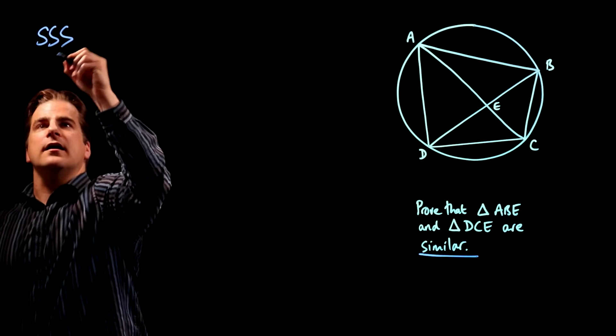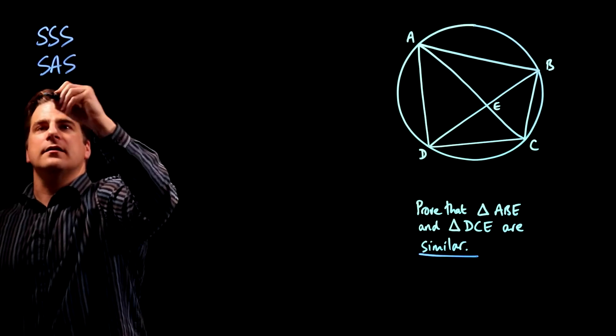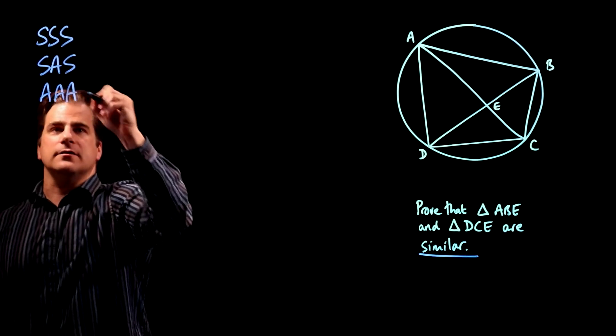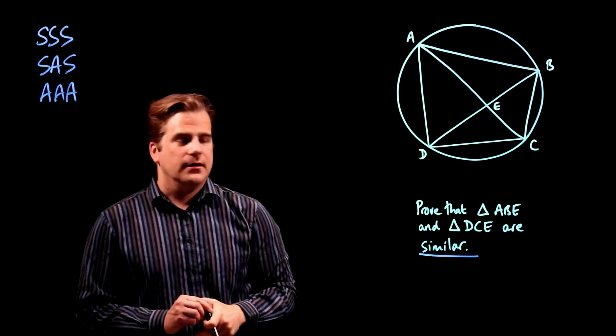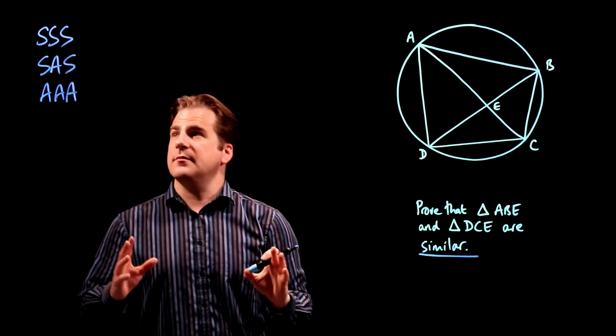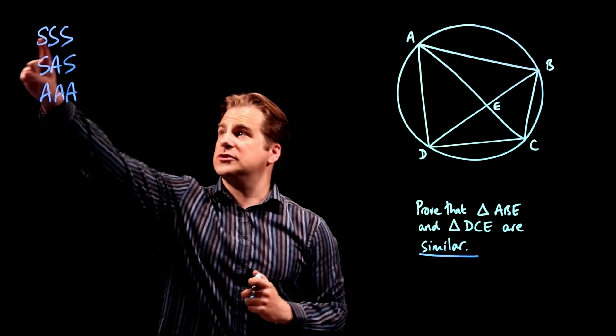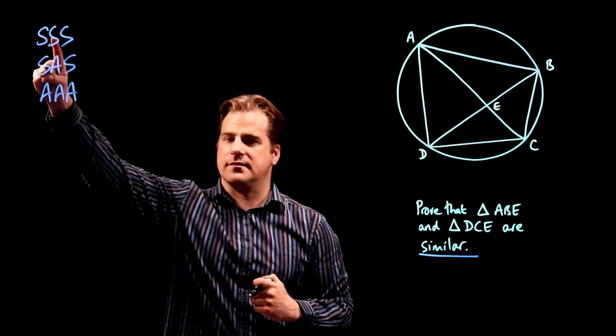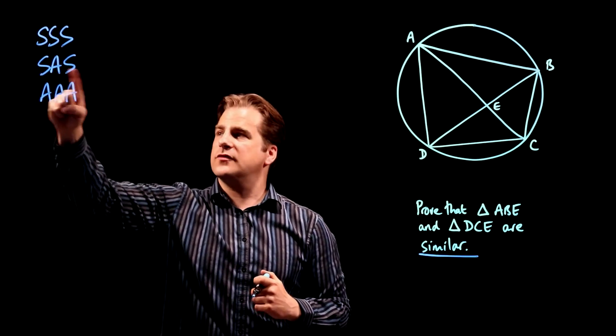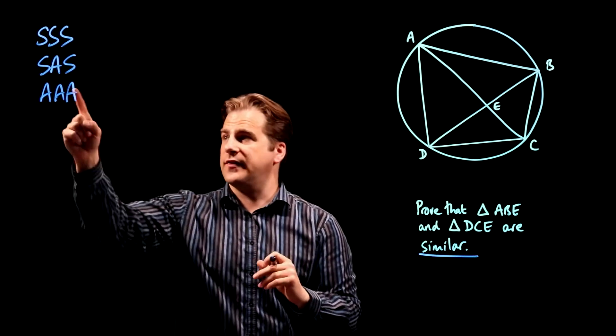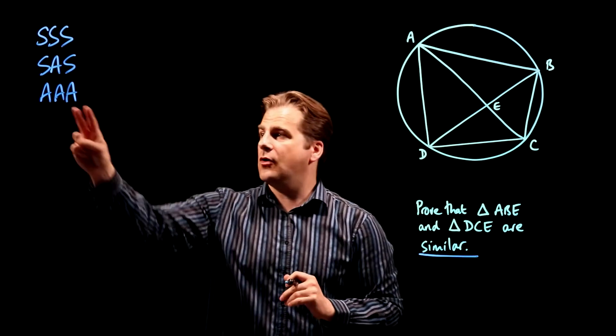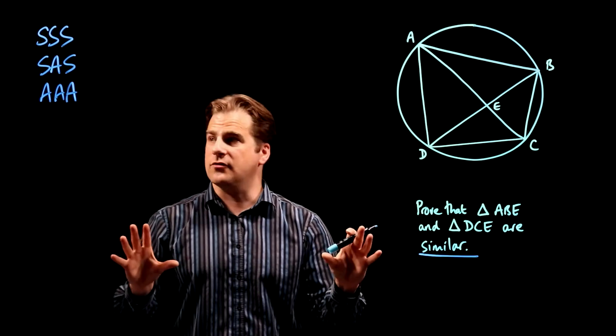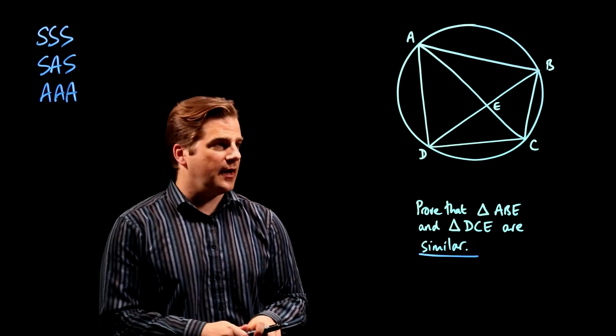They are side, side, side, side angle, side, and angle, angle, angle. That means two triangles are similar if their three sides are in proportion (SSS), or two sides are in proportion and the angle between them is the same (SAS), or if the three angles in the two triangles are the same (AAA).